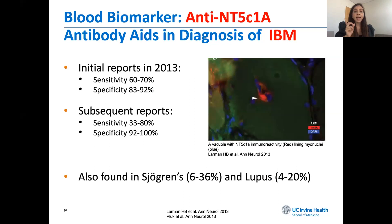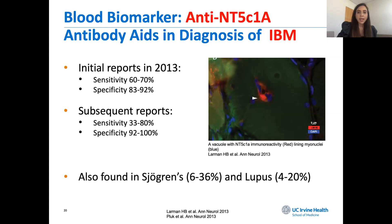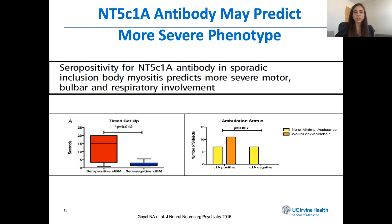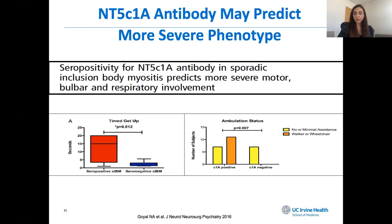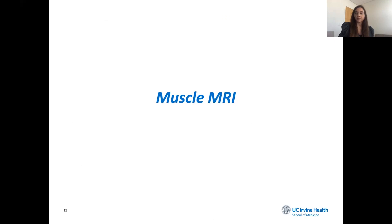The last subtype is inclusion body myositis. There is now one autoantibody identified, NT5C1A, present in about 40 to 60 percent of patients. We were curious why some IBM patients had the autoantibody and others did not. We did a small study here at UC Irvine of 25 patients and found that patients with this autoantibody and inclusion body myositis may have more motor difficulties, gait difficulties, swallowing difficulty, and respiratory involvement. Subsequently, the European group did a larger study and found similar findings, so we're keeping an eye on whether this holds true.